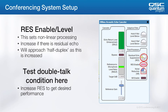After that, it's time to test the system in the double-talk condition. Have far-end and local talkers speaking at once and see if echo reaches the far end. If so, increase the RES percentage to just enough to eliminate any echo. You'll want to be sparing with this, as conference participants may start to feel like the system is half-duplex as it's increased.